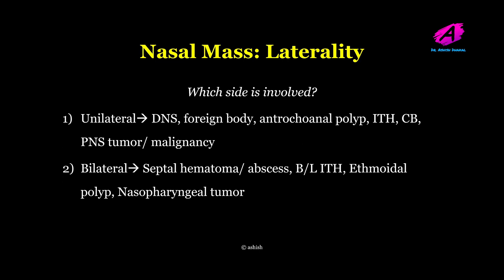Ask about the laterality of the nasal mass — which side is involved, whether unilateral or bilateral. Unilateral nasal mass may be due to deviated nasal septum, foreign body, antrochoanal polyp, inferior turbinate hypertrophy, concha bullosa, or paranasal tumor or malignancy. Bilateral nasal mass may be due to septal hematoma or abscess, bilateral inferior turbinate hypertrophy, ethmoidal polyp, or nasopharyngeal tumor.